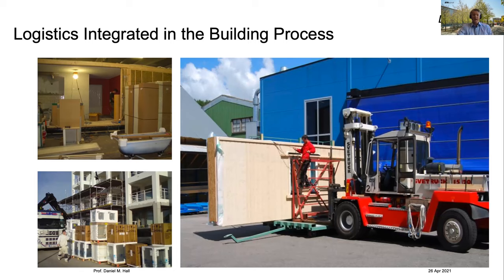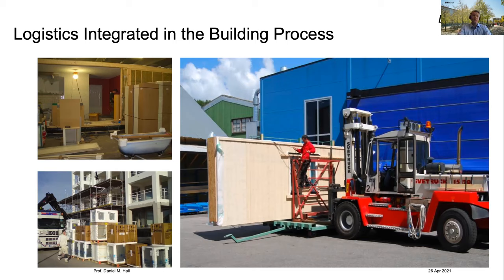Really what industrialized construction does is — because you have a standardized product or product platform — you start to be able to invest in more specific machining technologies and logistics technologies. Whereas most construction tools today are very general tools made to be modified and do a lot of different tasks. If you think about a handsaw — a skill saw — that's a very flexible tool. But as you start investing in standardization, you ask: is that tool really the most efficient, the most safe? Can we think about more specialized tools that do the job we know we have to do over and over again?